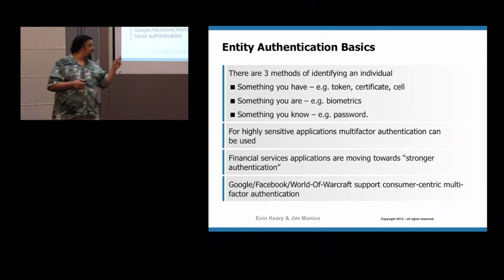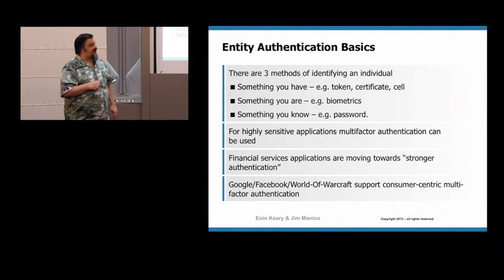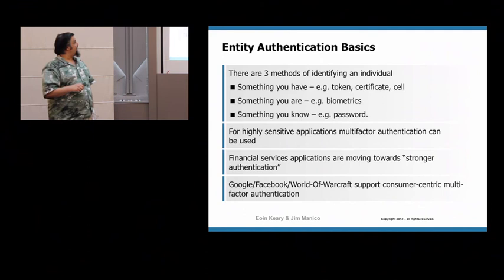There are three methods of multi-factor: something you have, like a physical token or mobile device; something you are — biometrics; and something you know — a password. For most services we'll build, biometrics is not an effective factor. Let me explain why.